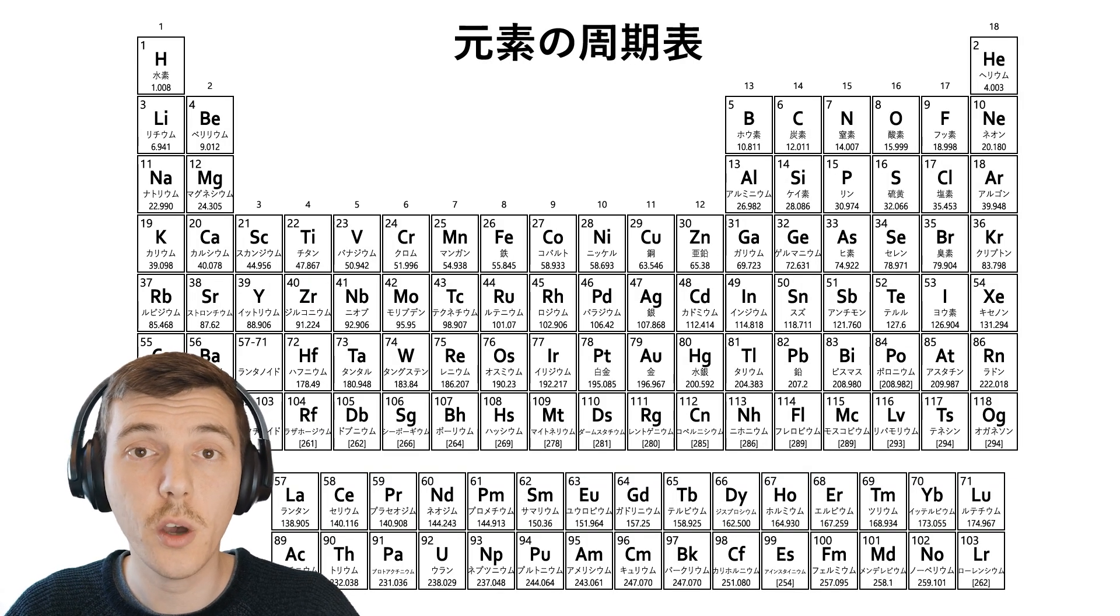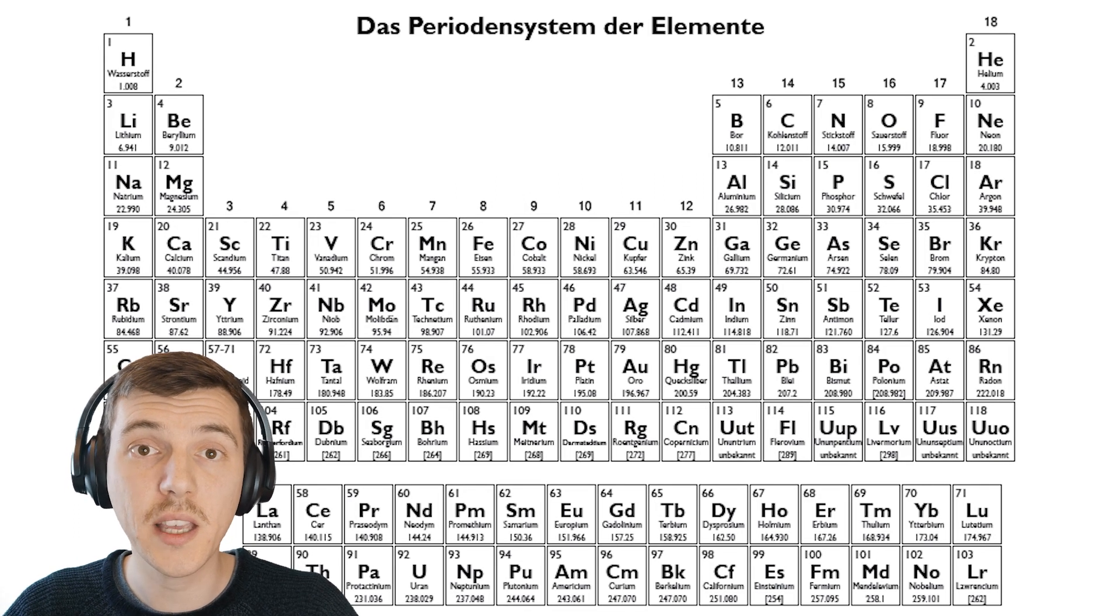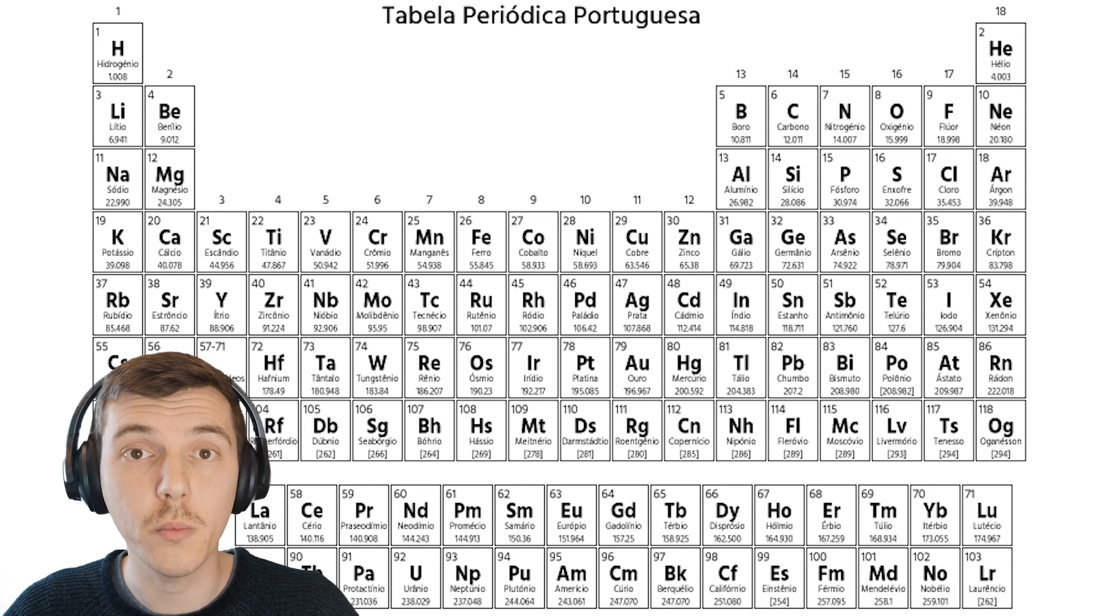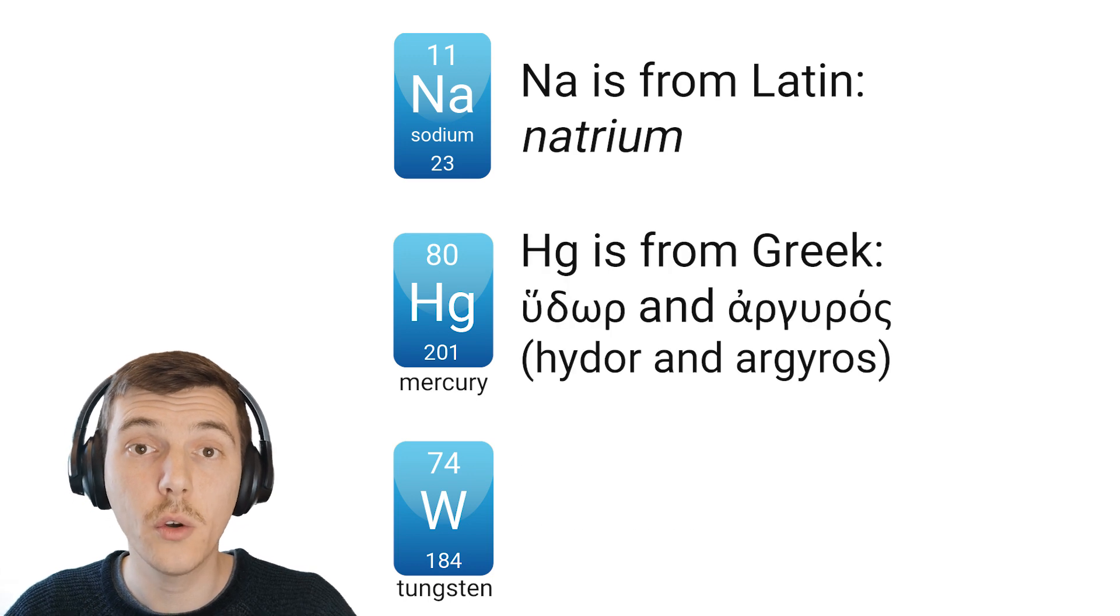The one or two-letter code of a symbol is internationally recognized. That means that a scientist from any part of the globe will be able to know what element you are talking about when you write its symbol. Not all of the element symbols make sense at first, but that's because some of them are based on other languages, like Latin, Greek, or even German.